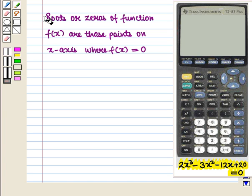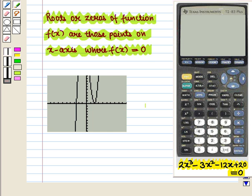Now we know that roots or zeros of function f(x) are those points on the x-axis where f(x) = 0. That is, on the graph, the points of intersection of the curve with the x-axis will give us real zeros of the given function. Also we should note that only real zeros can be found using the graph.